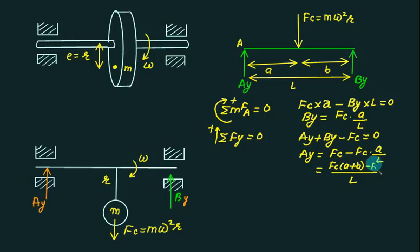Minus of Fc multiplied by A. So if you open the bracket, Fc A and Fc A get cancelled. And you're getting the reaction Ay multiplied by Fc, multiplied by B, divided by L.